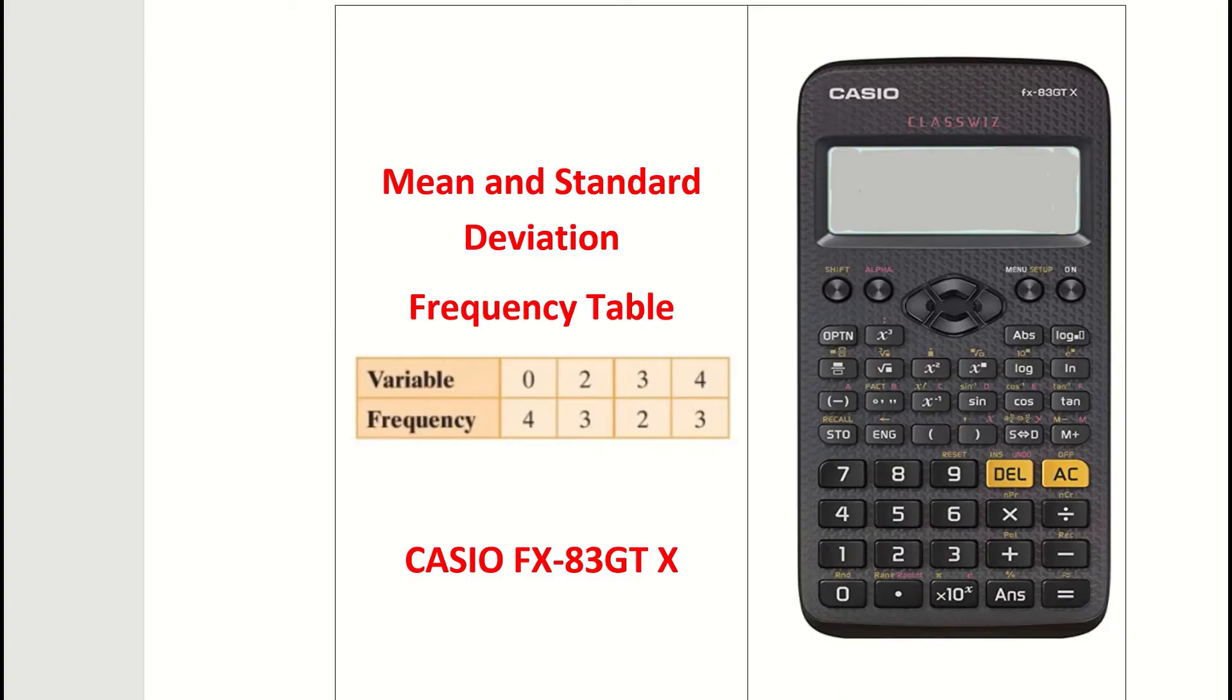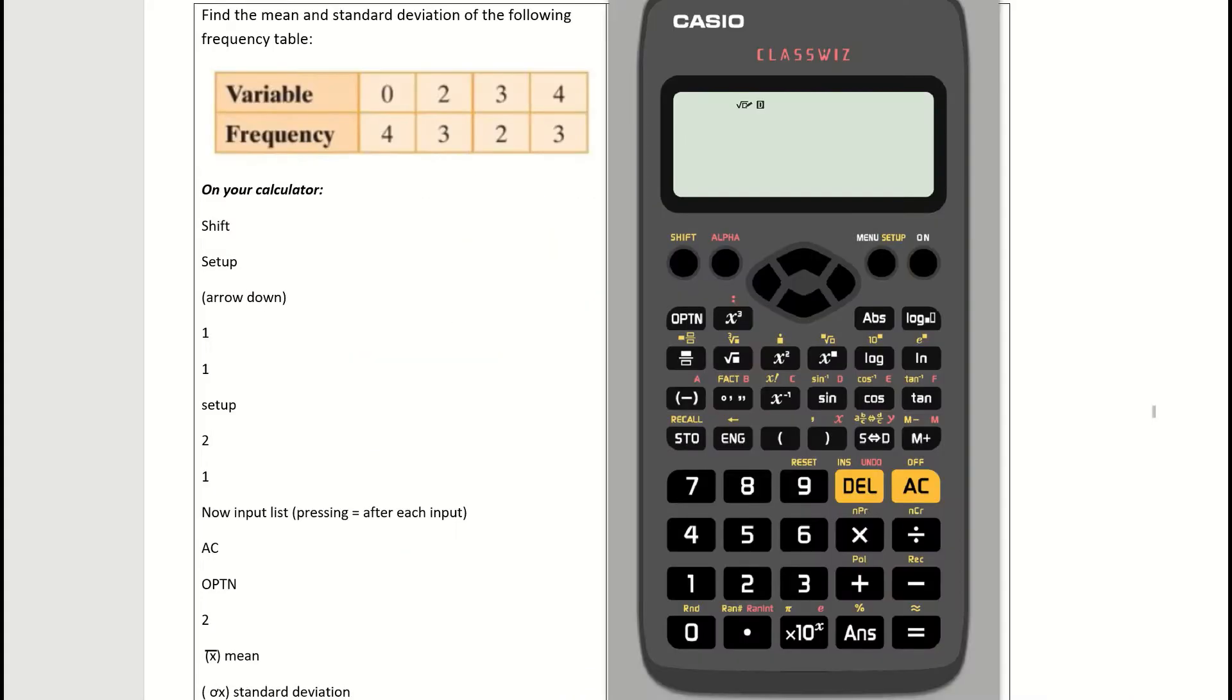Let's have a look. This is our table that we're going to use to find both the mean and standard deviation. I've taken out our Casio calculator, and on the left-hand side I've listed out the instructions that you can follow, but we're going to go through them on the right-hand side as well. The question is asking us to find the mean and standard deviation from this frequency table. We have our variable and the frequency, the frequency being how often it occurs.